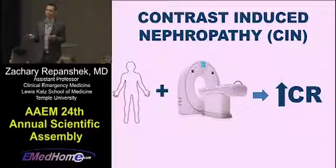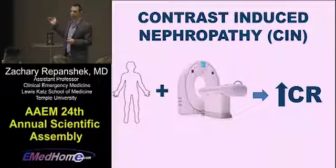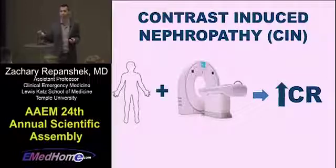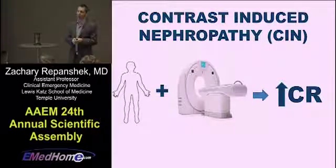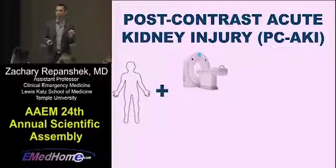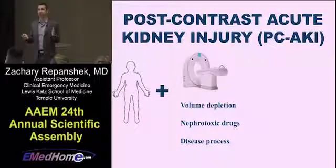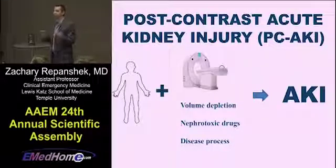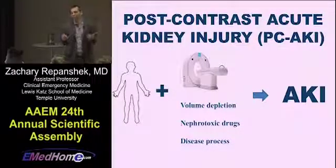Our idea of contrast-induced nephropathy came from studies that just measured an elevation of creatinine, but didn't necessarily say whether that had clinical significance or whether the creatinine came back down two days later. These studies also didn't study how many patients' creatinine went down after getting IV contrast. The new idea is that a person gets IV contrast, but that same person also has volume depletion, may be getting nephrotoxic drugs, or has other disease processes — all those things together causing acute kidney injury. Things we actually care about — need for dialysis, mortality — are what need to be studied, and the studies that looked at these didn't find that IV contrast was the causative agent.